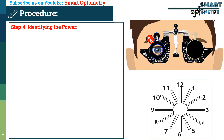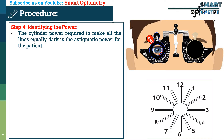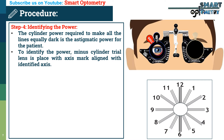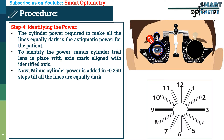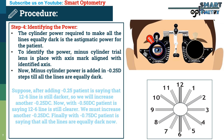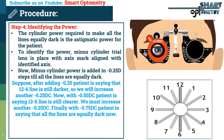Step 4: Identifying cylinder power. The cylinder power required to make all lines equally dark is the astigmatic power. A minus cylinder trial lens is placed with its axis mark aligned with the identified axis. Minus cylinder power is then added in 0.25 diopter steps until all lines are equally dark. For example, after adding minus 0.25 diopter cylinder, the patient reports the 12–6 line is still darker, so another minus 0.25 diopter is added. With minus 0.50 diopter, the 12–6 line is still clearer.